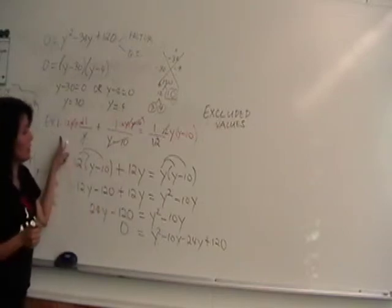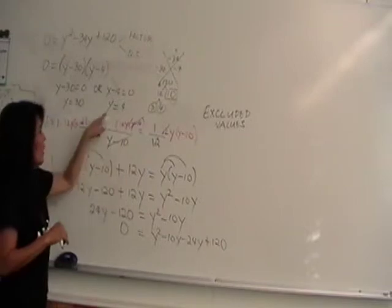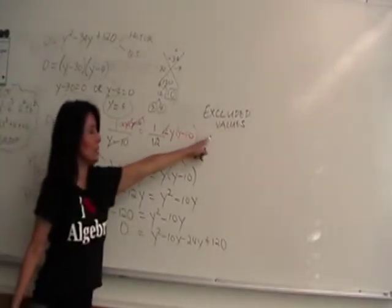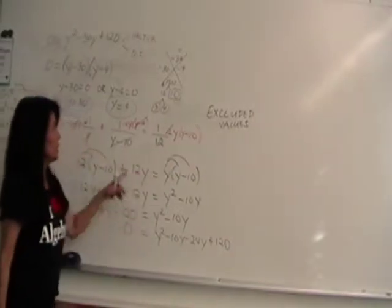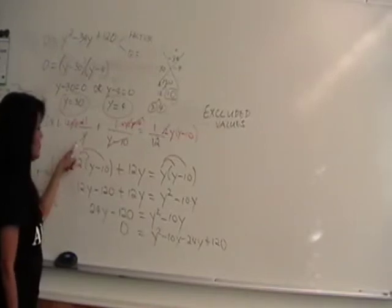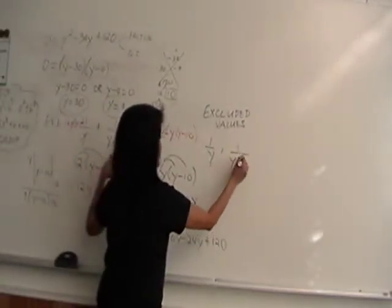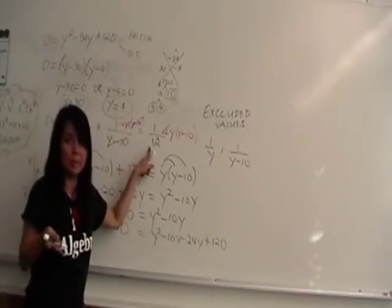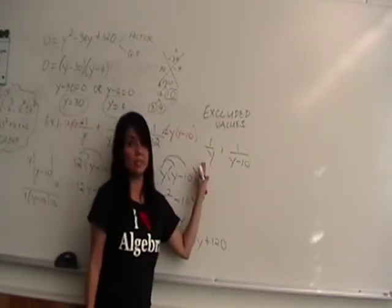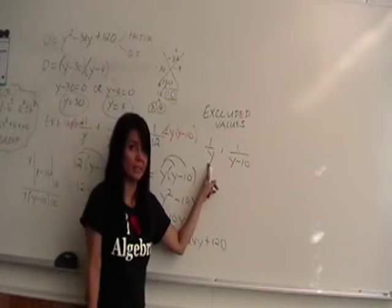For rational equations, because they're made of fraction-like rational expressions, we have to be very careful. We need to check for excluded values. The rational expressions here are 1/y and 1/(y minus 10) — these have variables in the denominator. We don't want to assign a value for y that makes any denominator equal to zero, since division by zero is undefined.